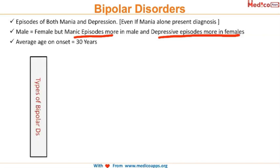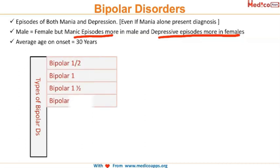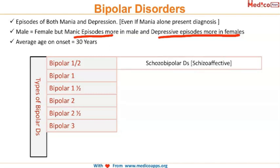When we talk about types of bipolar disease, the latest classification includes bipolar one, one and a half, two, two and a half, and three. Bipolar one and a half is schizoaffective bipolar disease, also called schizoaffective disorder.